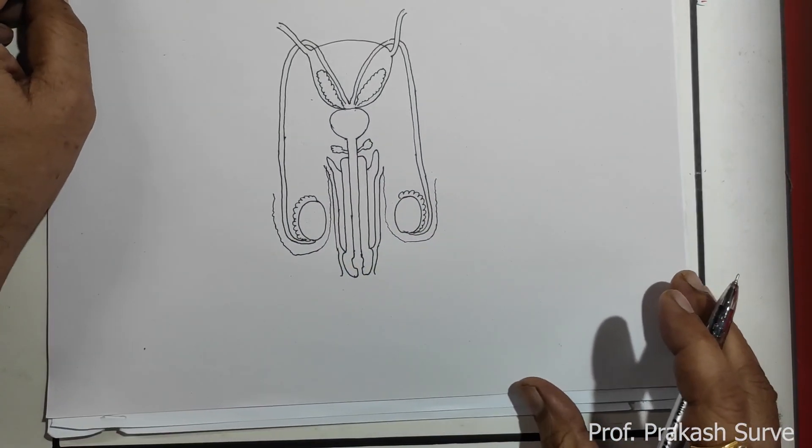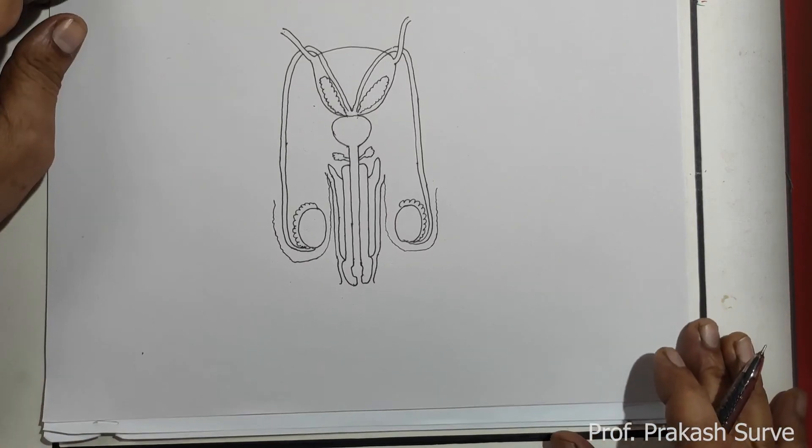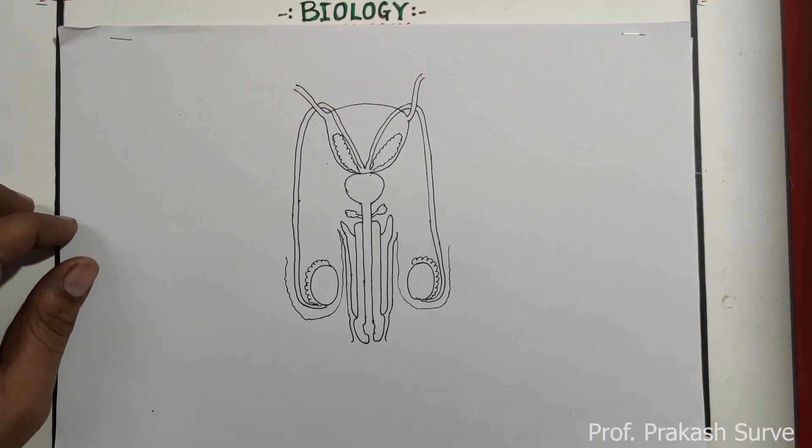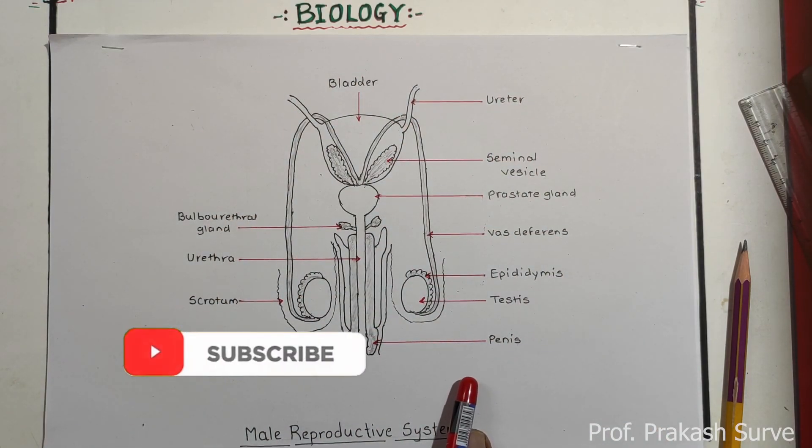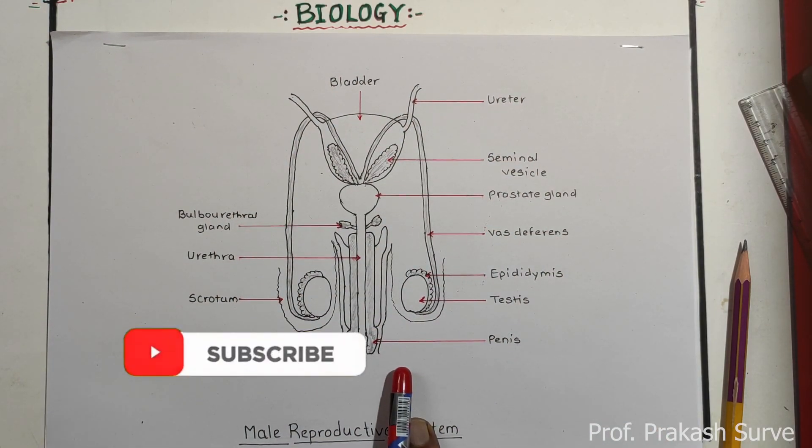So this is a complete diagram of the male reproductive system. We have done this all step by step with all the labels you have to complete this. If you like my video please share with your friends so that everybody will get the benefit of these videos. Thank you.